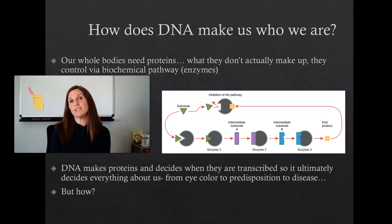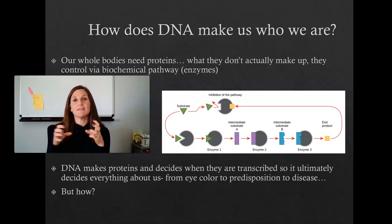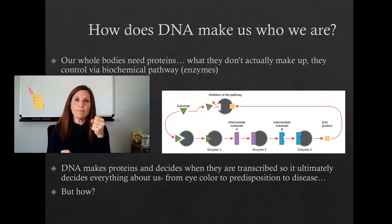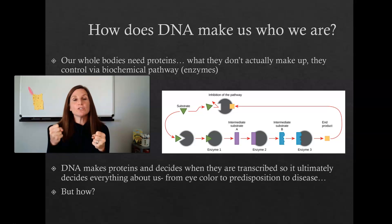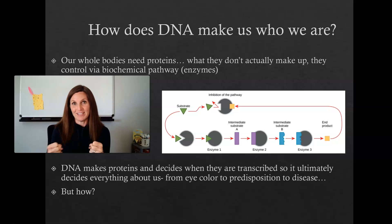In this chapter we're really looking at how DNA makes those proteins and how we get the correct proteins in the right places inside our body. We're going to look at two things: how we make the proteins, and how we control or regulate those genes in the making of those proteins.